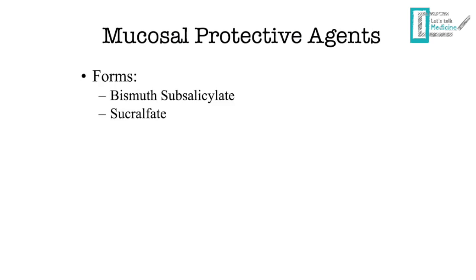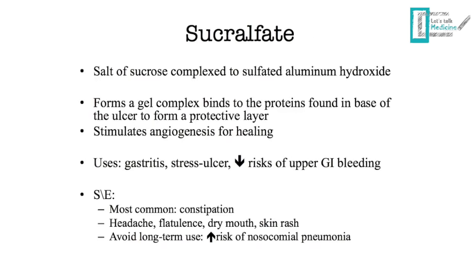Mucosal protective agents include sucralfate and bismuth subsalicylate. Sucralfate is a salt of sucrose complexed to sulfated aluminum hydroxide. It forms a gel complex that binds to proteins at the base of the ulcer, creating a protective meshwork layer, and it stimulates angiogenesis, increasing repair rate. Uses include gastritis, stress ulcers, and reducing upper GI bleeding risk. The most common side effect is constipation; long-term use increases pneumonia risk.